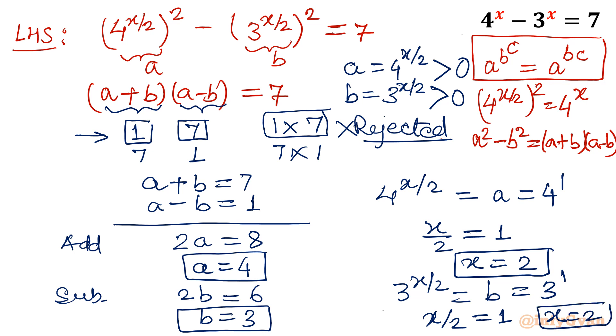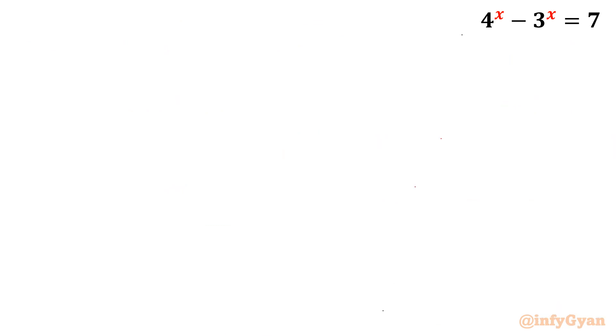So from this method also we have got the same result. x is equal to 2 is our solution. Now let's check, verify the result also. Verification. X equal to 2. Put this value, 4 power 2 minus 3 power 2, which is your left hand side. 16 minus 9, 7. And that is your RHS. Hence verified.